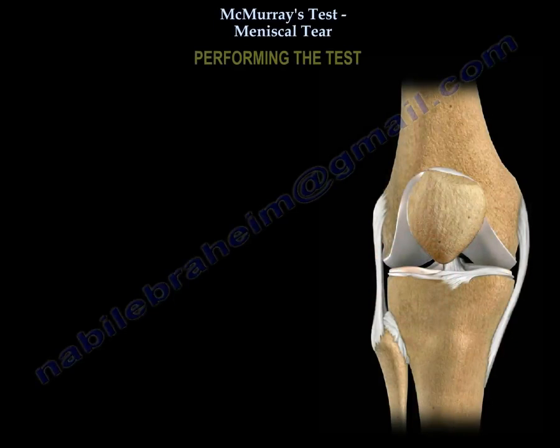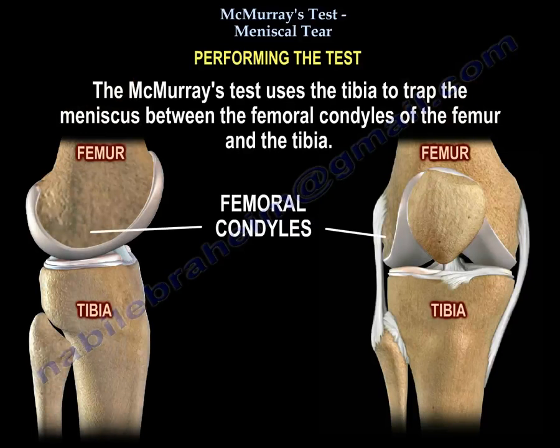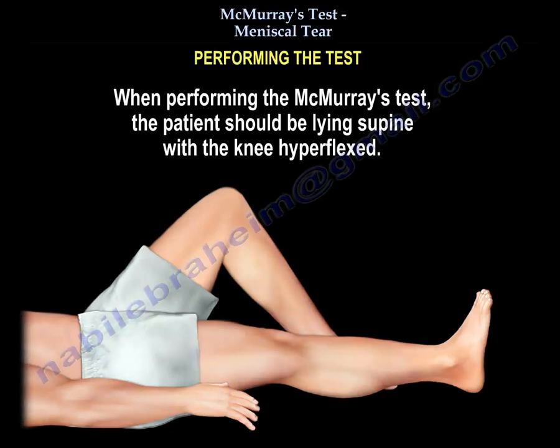The McMurray's test uses the tibia to trap the meniscus between the femoral condyles of the femur and the tibia. When performing the McMurray's test, the patient should be lying supine with the knee flexed or hyperflexed.